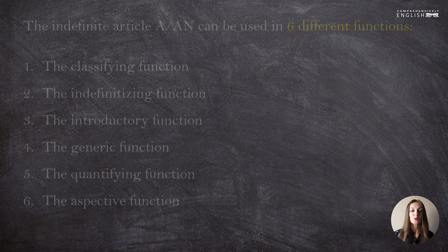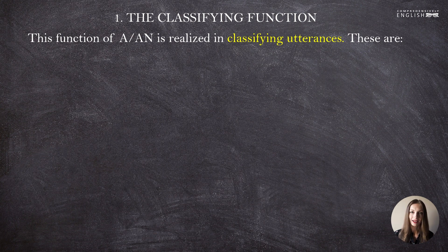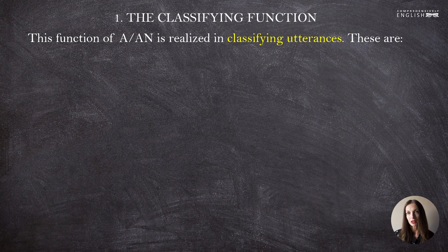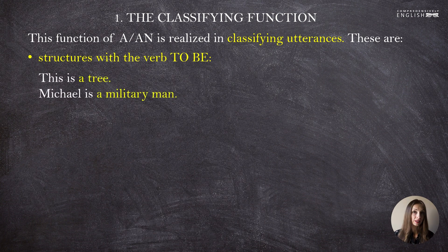Let's start with the classifying function. This function is realized in classifying utterances — sentences that classify something or introduce classifying information. First of all, these are structures with the verb 'to be': 'This is a tree,' 'Michael is a military man,' 'It was a mistake.'